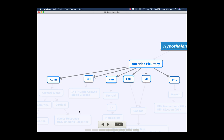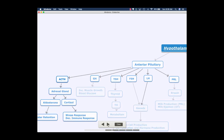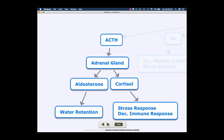The first one we're going to focus on is ACTH. ACTH acts on the adrenal gland. The adrenal gland will give you mineralocorticoids, which is a class of hormone, and glucocorticoids, again a class of hormone. The example here is cortisol for our glucocorticoids and aldosterone for our mineralocorticoids.